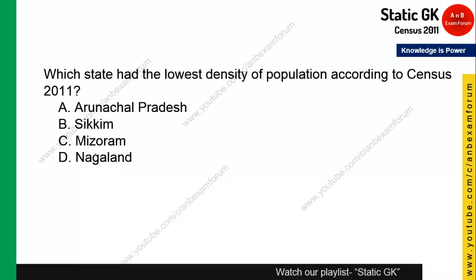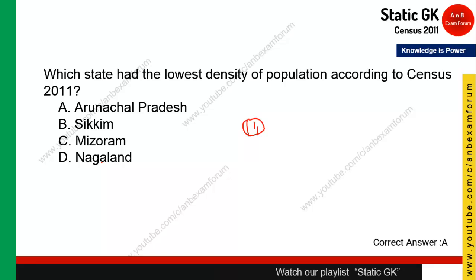Question 16: Which state had the lowest density of population according to Census 2011? Density requires considering both area and number of people. Arunachal Pradesh is the correct answer — it has extensive mountainous terrain and geographical barriers, meaning people are widely spread, resulting in a very low density.